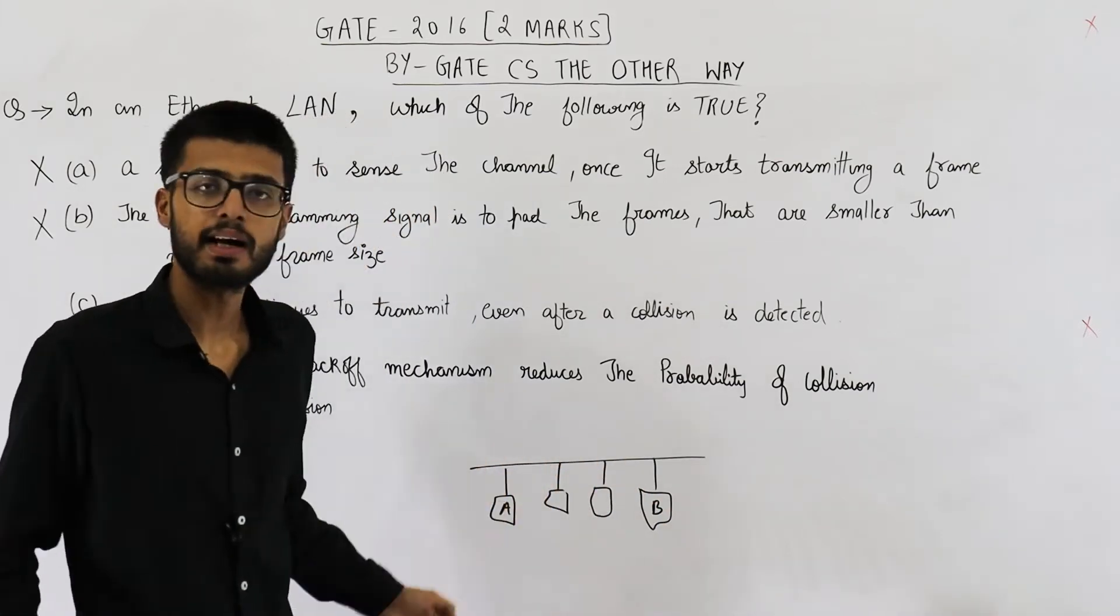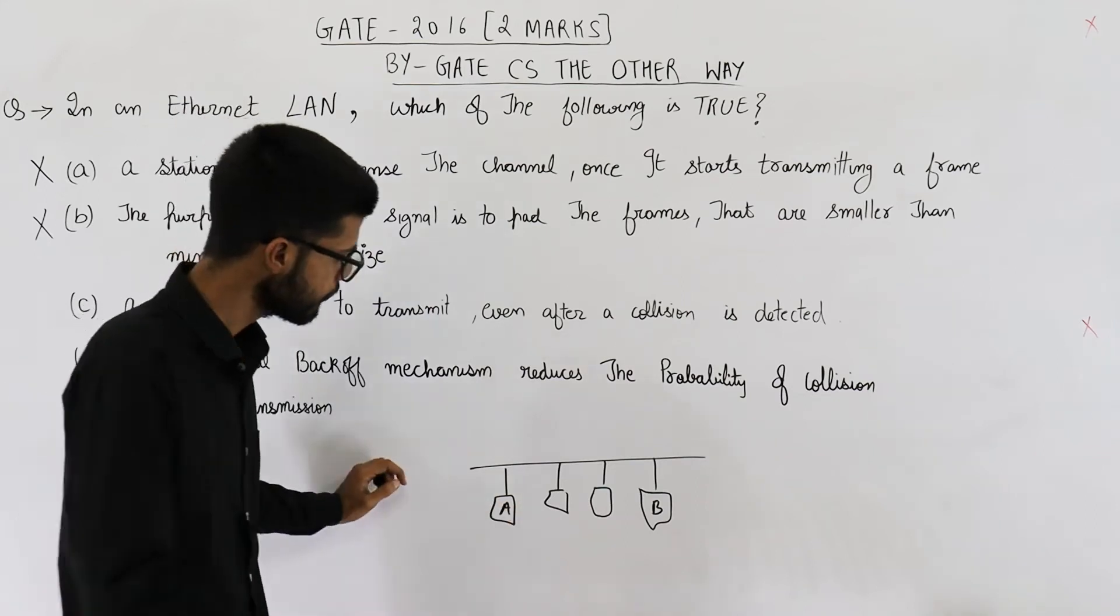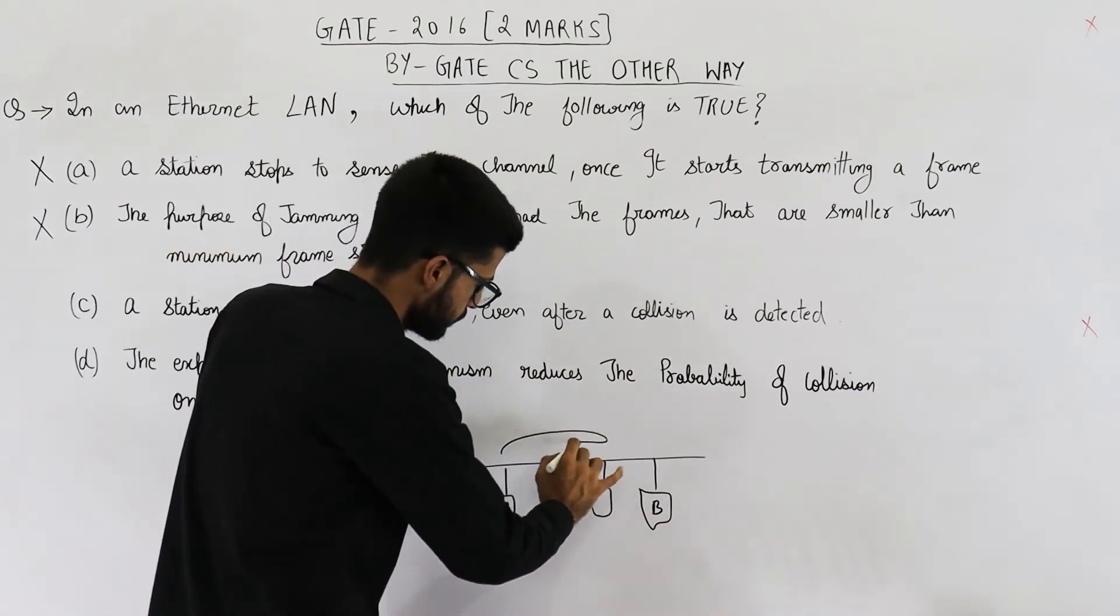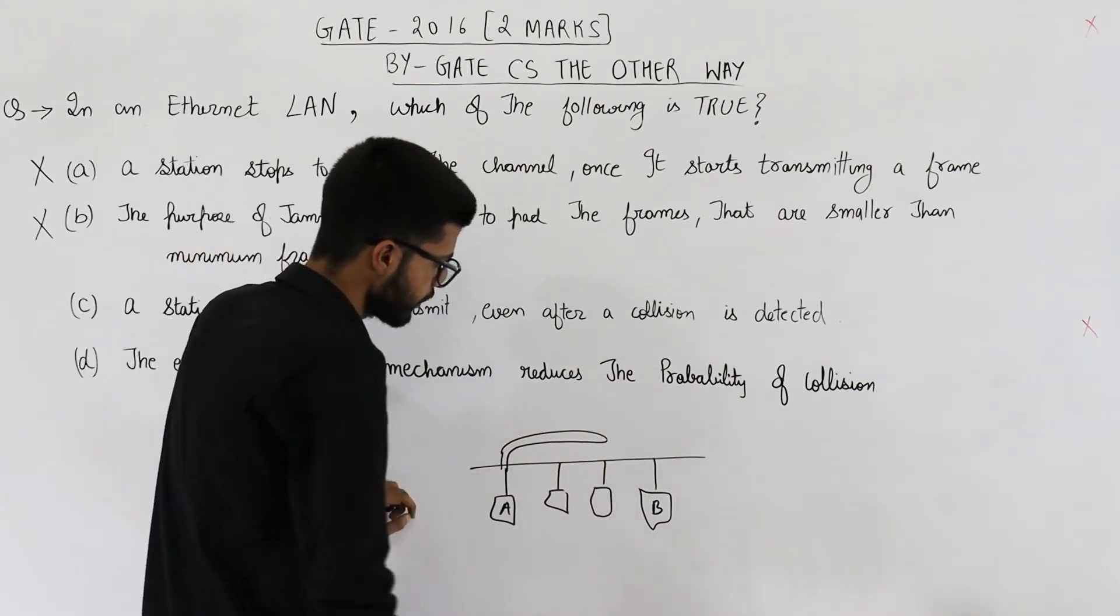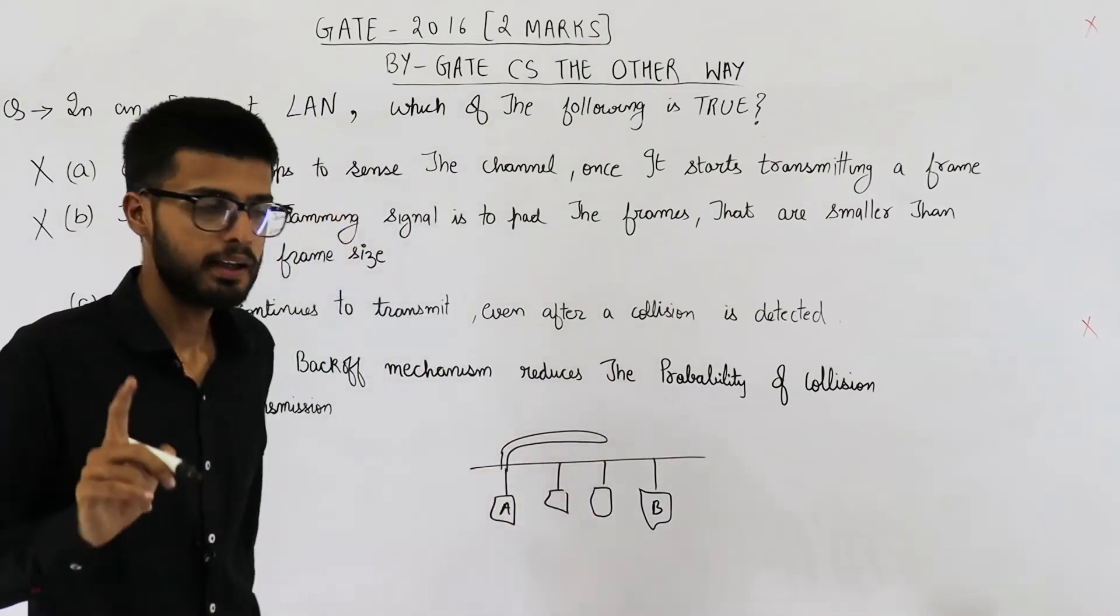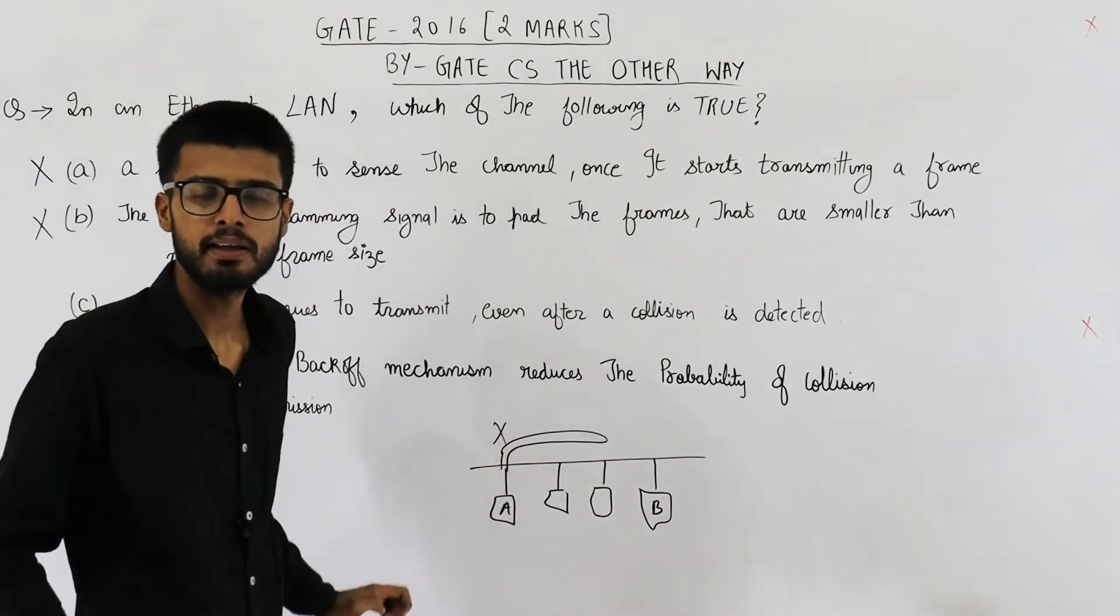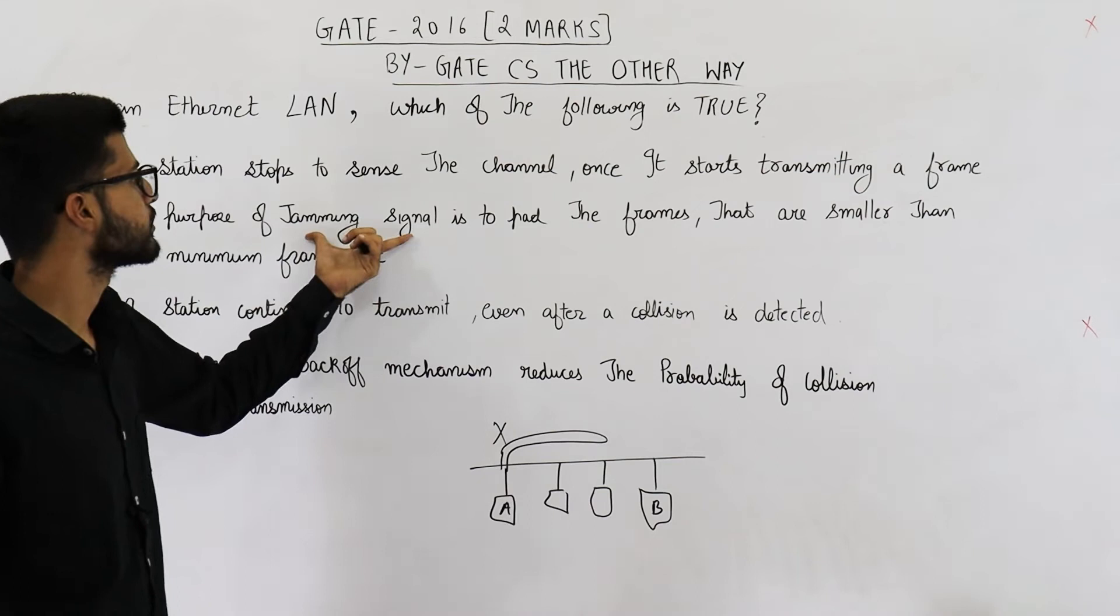Now suppose while transmitting the frame, A gets a collision signal. A was transmitting a frame. The frame has reached till here. Now A got a collision signal. What will A do? A will just stop transmitting this frame immediately and A will send a jamming signal.